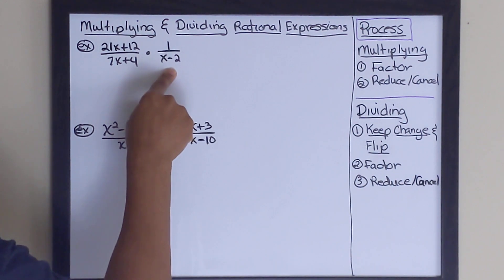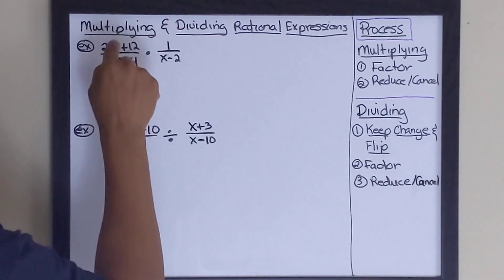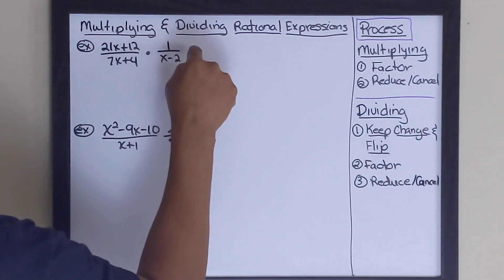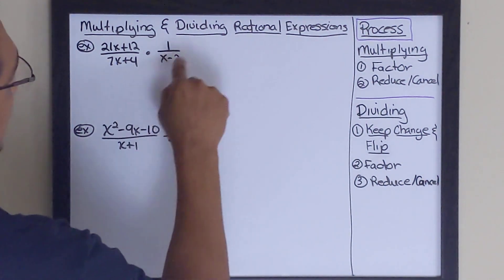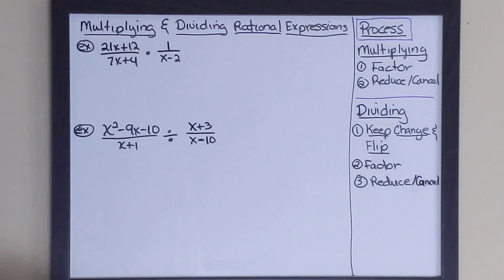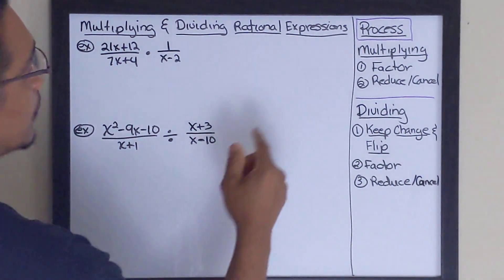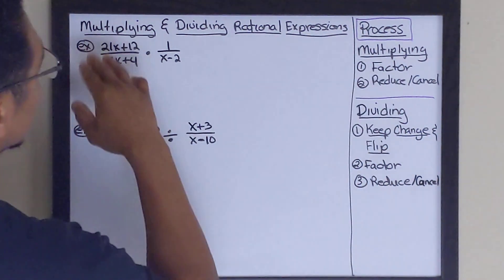all you have to do to multiply fractions is to multiply straight across. You multiply numerator times numerator, and you're going to get numerator for your answer. And denominator times denominator, and you're going to get denominator for your answer. But before you do all that, to make this problem a little bit easier, what you may want to do is you may want to factor everything that's factorable.